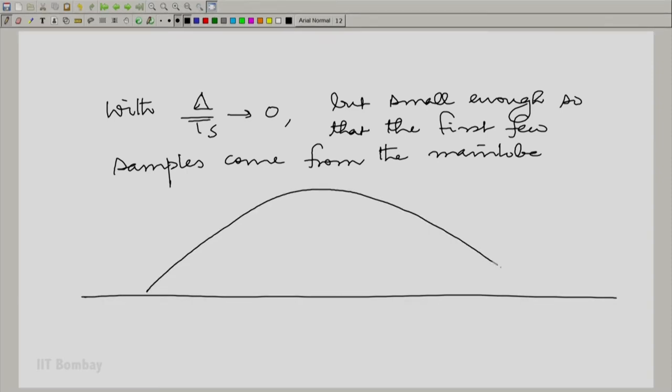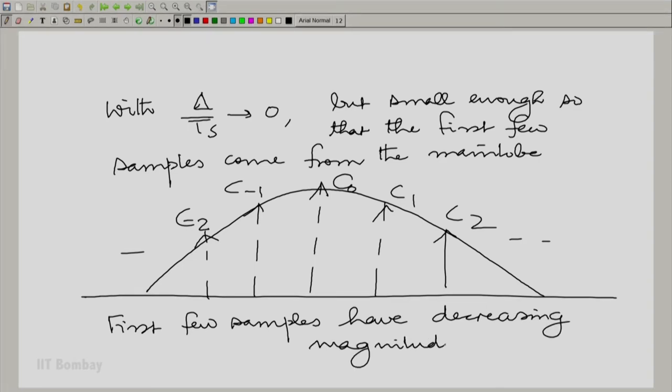Let me zoom this to show you what I mean. So c0 is like this, c1 is like this, so is c minus 1 and then c2 and so on, c minus 2 and this. The first few samples come from the main lobe. What do you observe, the first few samples have decreasing magnitude. Now, this is going to be important to us, this decreasing magnitude is going to be important to us.